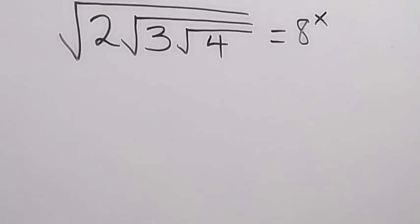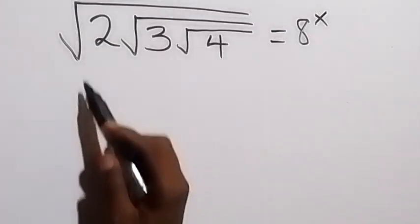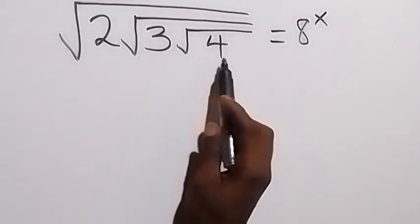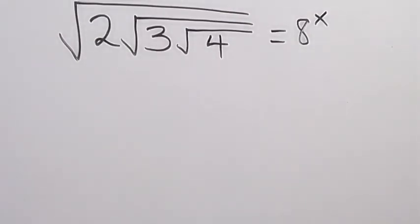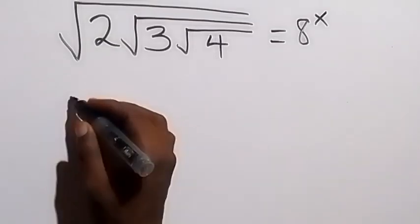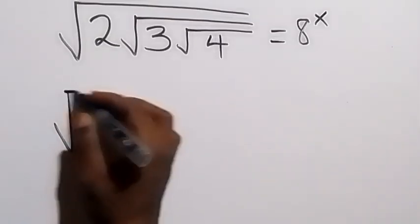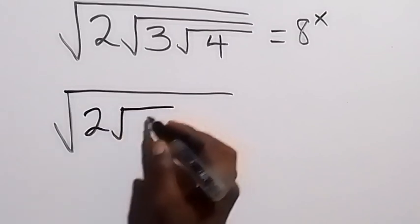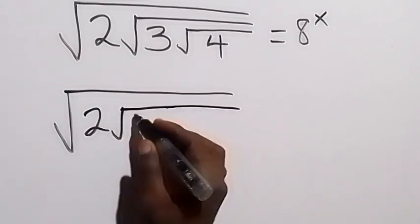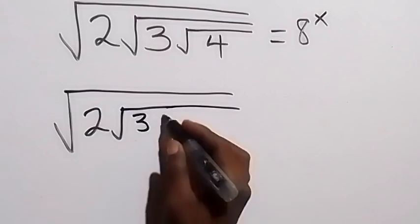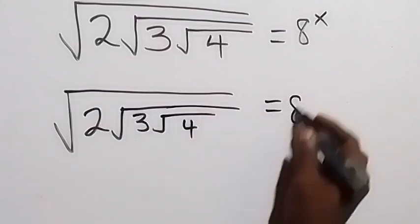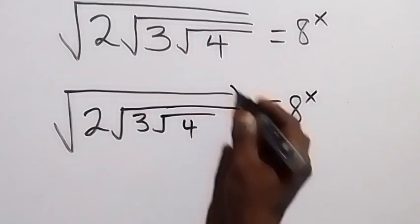Hello, you are welcome. How to solve this problem: square root of 2 times root 3 times root 4, equals 8 raised to power x. Let's take the square on both sides, so we have square root of 2, root 3, then inside the root we have root 4, equals 8 raised to power x.